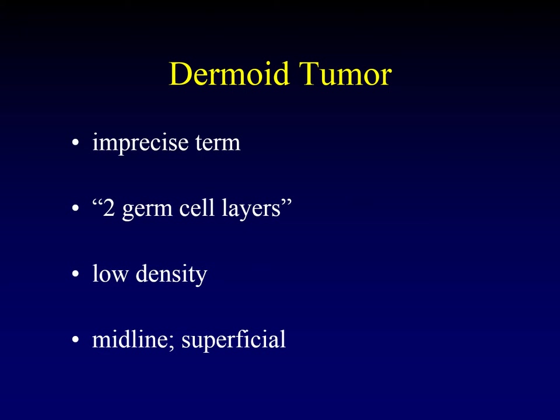Dermoid tumors are midline, much like thyroglossal duct cysts, but they are more superficial. Remember how important the strap muscles were when we talked about thyroglossal duct cysts — that's how you distinguish them from dermoid tumors. Dermoid tumors are more superficial and not embedded in the strap muscles.